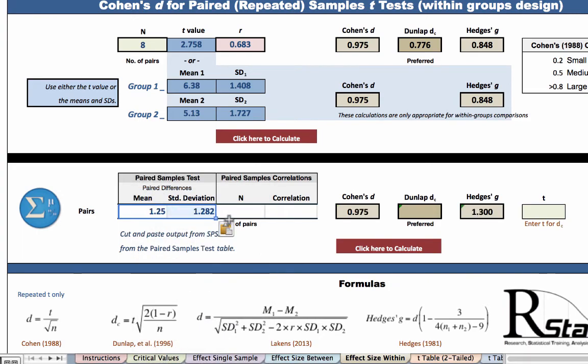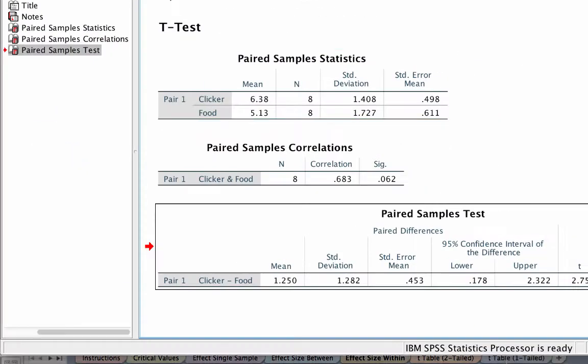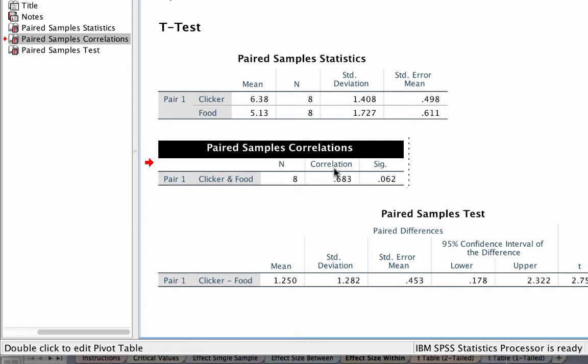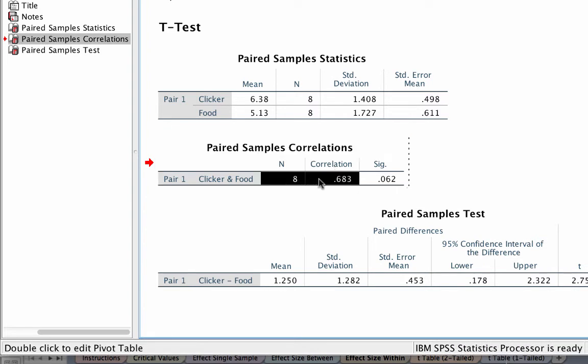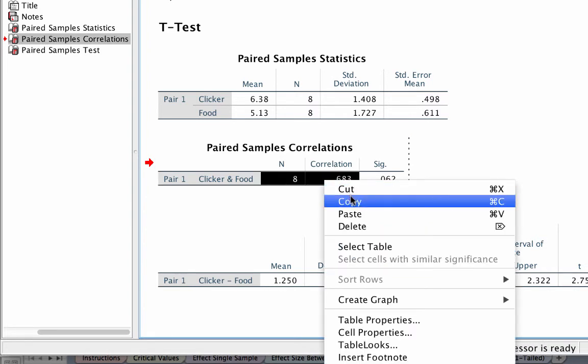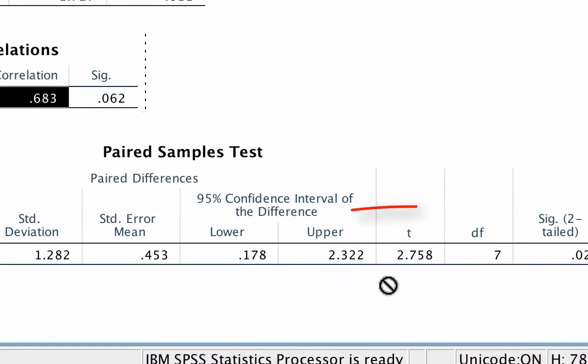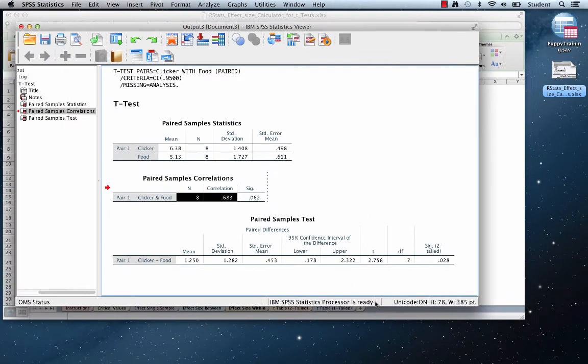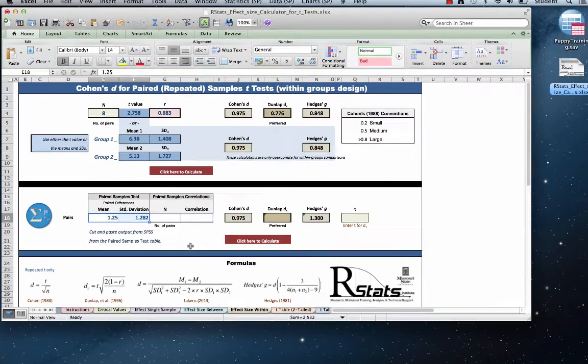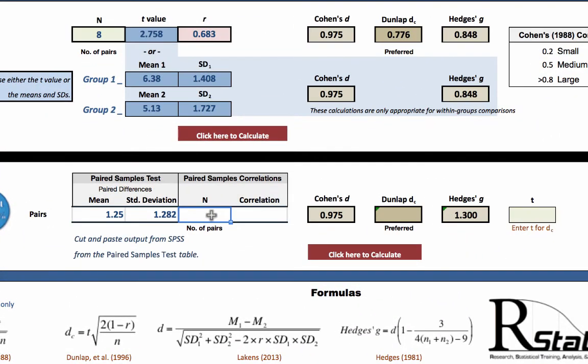Now go back to SPSS and this time, from the paired samples correlation box, grab the sample size and correlation. And while we are here, notice that t equals 2.758. Back to the spreadsheet. Paste the values into the spreadsheet. And finally, enter the t-value that we memorized, 2.758, and click.